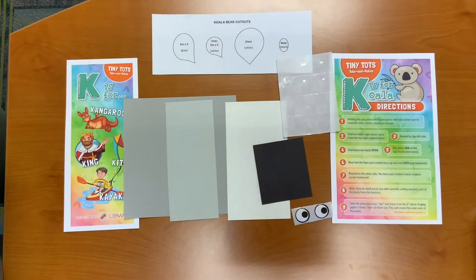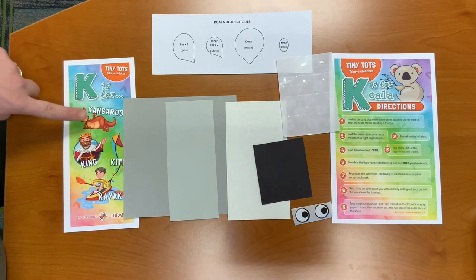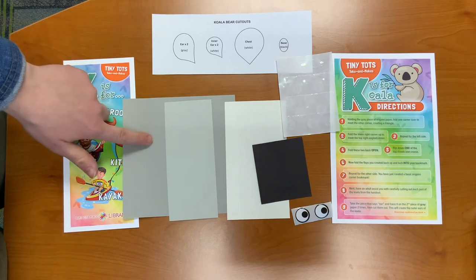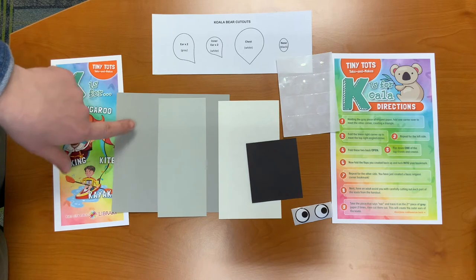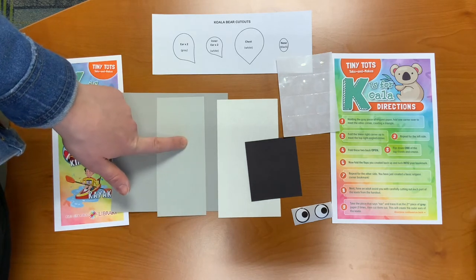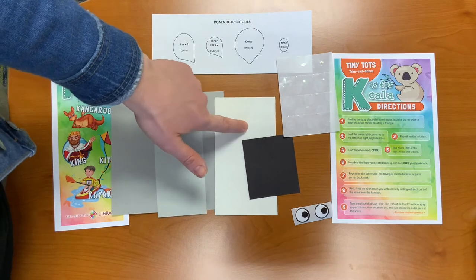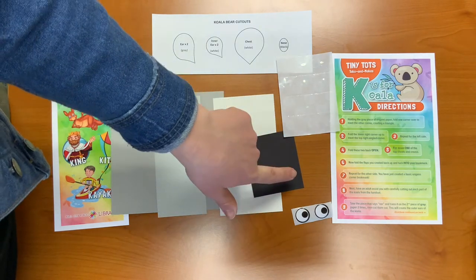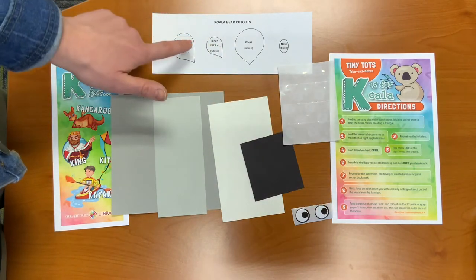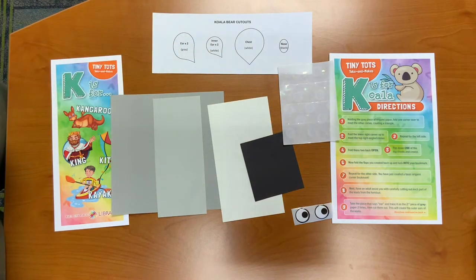In this week's Take and Make Kit, you should have received K is for words that begin with the letter K, a piece of gray origami paper, a smaller piece of lighter gray origami paper, white origami paper, black paper, two eyes, glue dots, directions, and then cutouts for the koala bear pieces.